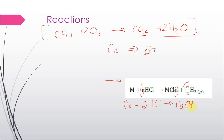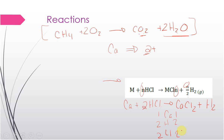That produces calcium chloride (CaCl2) plus 2/2 or one H2. If we check — calcium, hydrogen, chlorine — we have one calcium, two hydrogens, and two times one is two chlorines on the left. On the right, we have one calcium, two hydrogens, and two chlorines. So using this equation from your pre-lab gives you that nicely balanced equation.